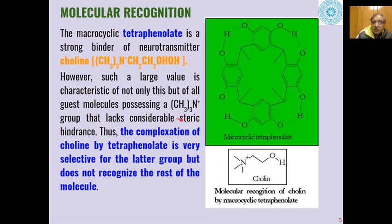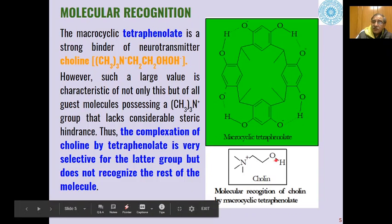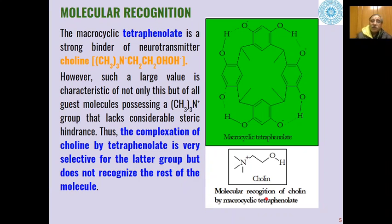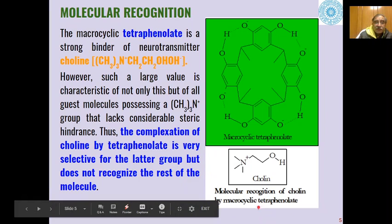Because of this, the complexation of choline by tetra phenolate is very selective — the phenolate ion groups bind to choline, and this is an example of molecular recognition of choline by macrocyclic tetra phenolate ion.